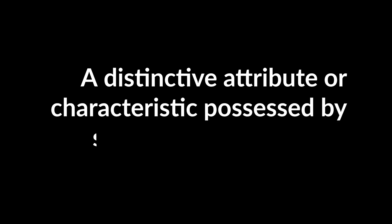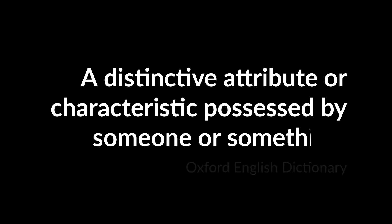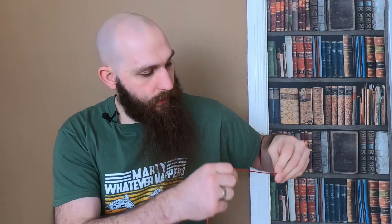Qualitative comes from the word 'quality,' which means, according to the Oxford English Dictionary, a distinctive attribute or characteristic possessed by someone or something. It basically means they tell you whether something meets a certain criteria or it doesn't. For example: how long is this piece of string? It is long enough to wrap around my finger.